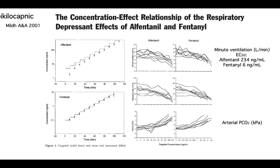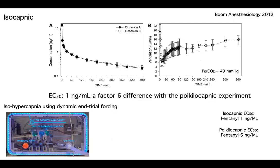You might say, okay, I believe that. But 6 nanograms per ml is quite high. We believe that fentanyl is quite a safe opioid — extremely safe — because it's not hard on the heart. You can ask Martin about his experience, but it's difficult to reach that concentration.